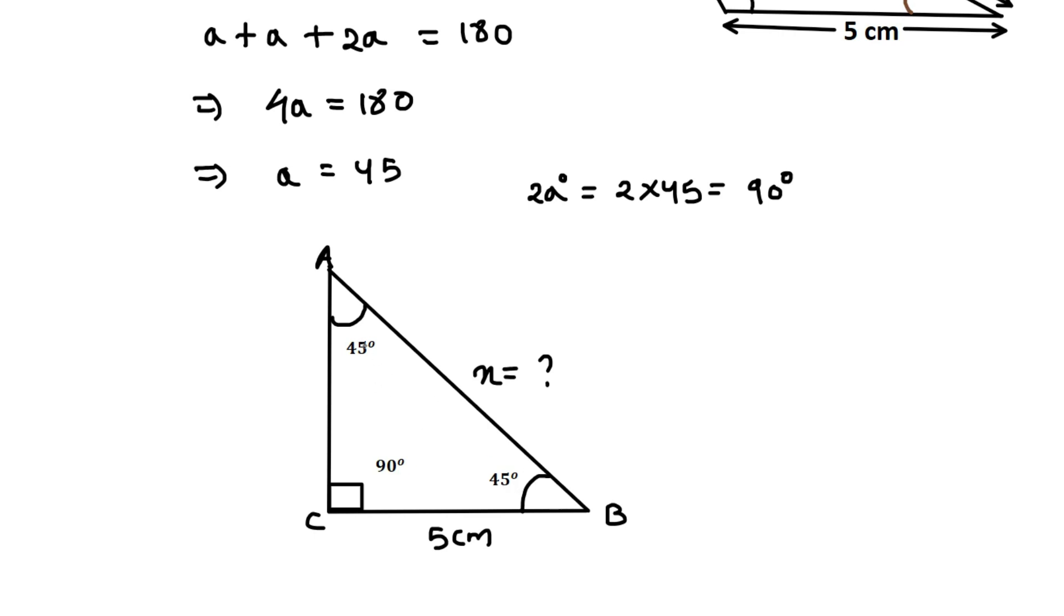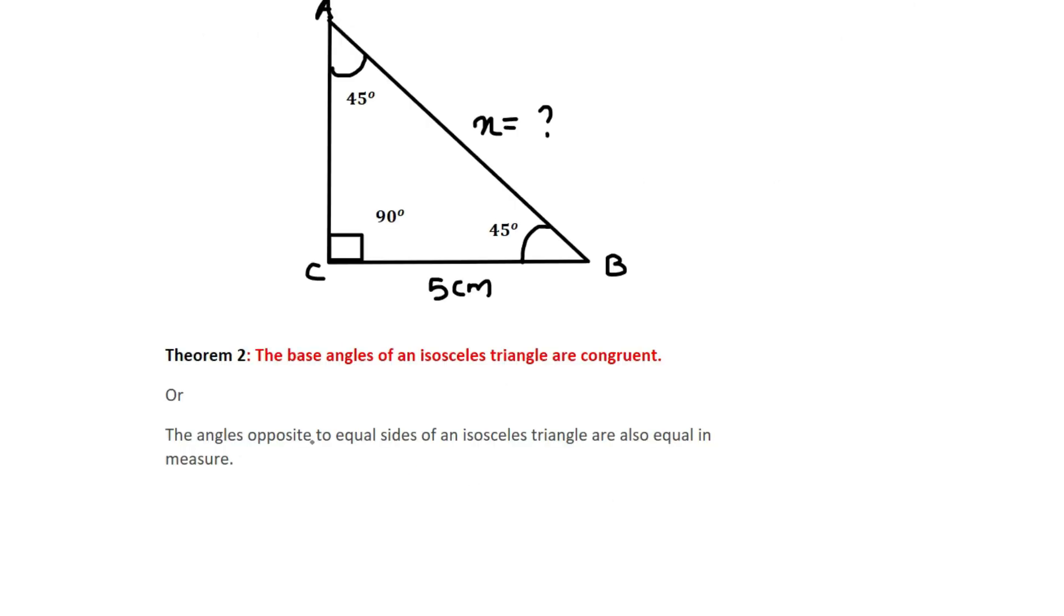Applying the theorem that angles opposite to equal sides of an isosceles triangle are equal in measure, the vice versa applies here. Since the opposite angles are the same, the sides must be equal. So AC = 5 centimeters. We found AC as 5 centimeters and BC as 5 centimeters.